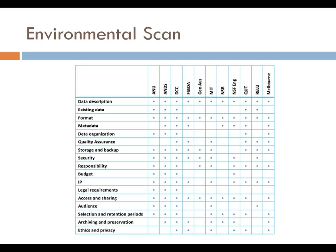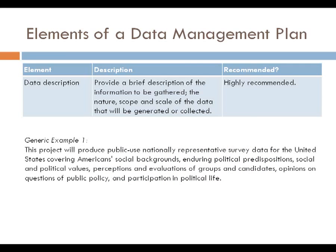This is a table available from the website. The bar across the top shows the various websites we reviewed in our environmental scan — looking at what other people were doing in terms of providing guidance on how to prepare data management plans. The rows list the various elements that each website recommended being part of a data management plan. Following each row across shows which elements are most popular; for example, data description is recommended by all the various websites, while others were recommended much more sporadically.